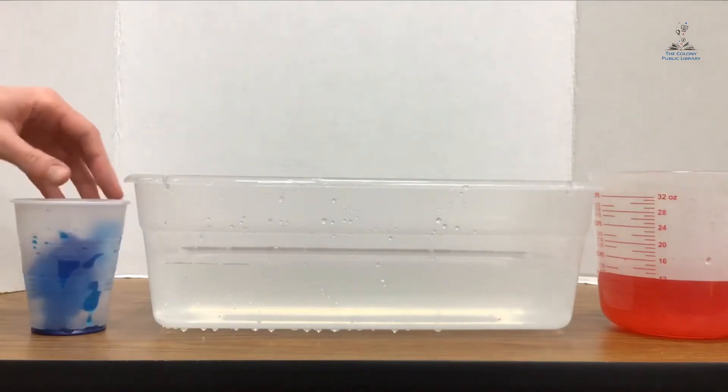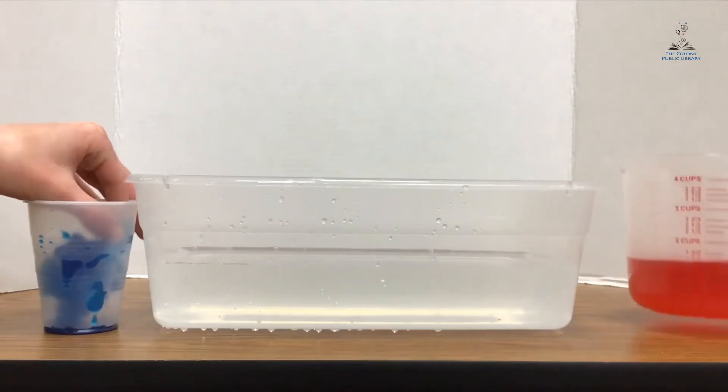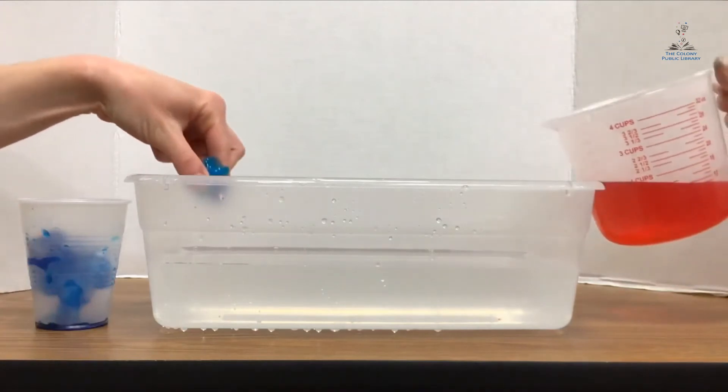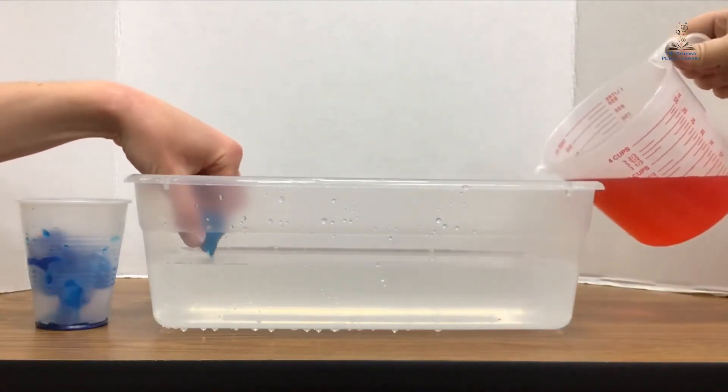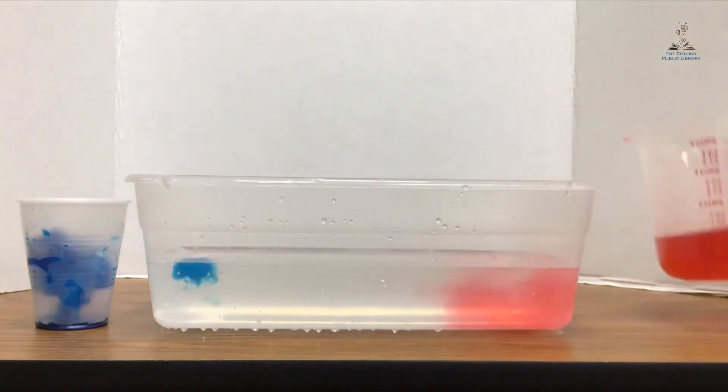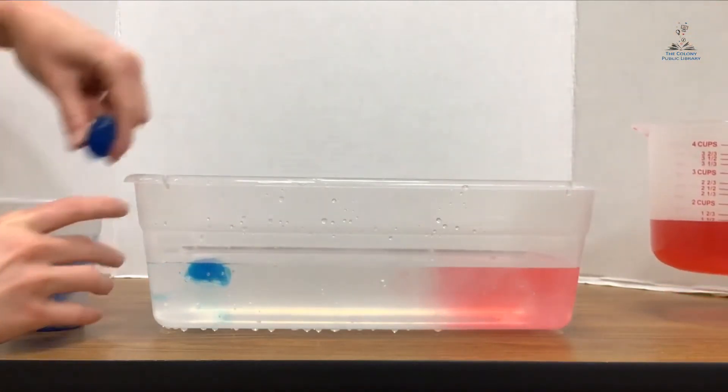So we want to kind of add these around the same time. I have someone helping me. So I'm going to take the blue ice water and the red hot water and mix them around the same time without disturbing the water. Are you ready? Let's mix. Let's put another ice cube in.